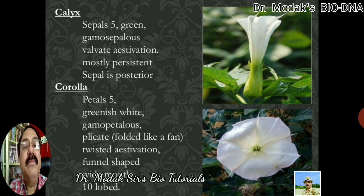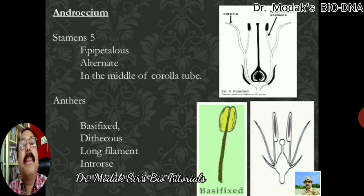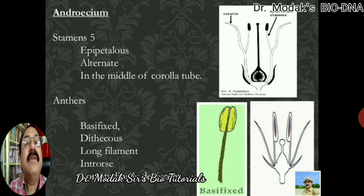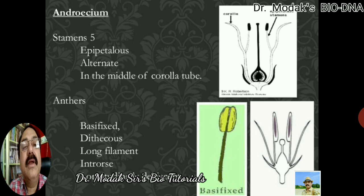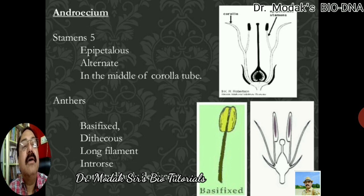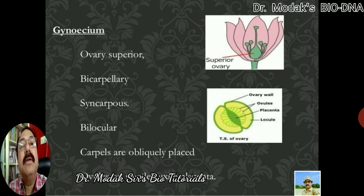The corolla is funnel-shaped, white-mouthed, and has ten lobes. If we talk about the androecium, there are five stamens but they are adnate to the petals and therefore the condition is called epipetalous. In the middle of the corolla they are present in an alternate arrangement as seen in the diagram. The anthers are dithecous — bilobed anther — and they are attached at the base of the filament, so the specific filament is comparatively very long. The opening or dehiscence of the anthers is towards the inside and therefore it is introse. Their dehiscence is longitudinal.